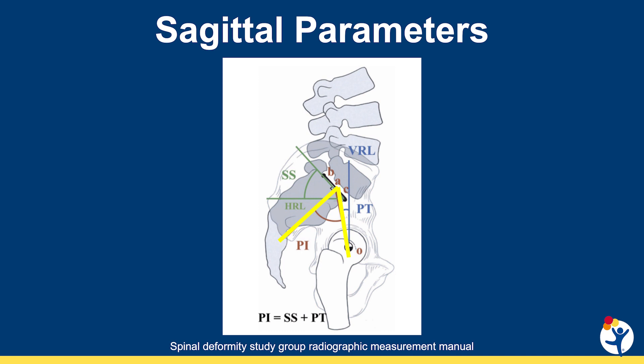Pelvic incidence is a summation of the sacral slope and pelvic tilt, and is not felt to change throughout life — it is unique to each patient. The sacral slope is an angle drawn from a horizontal and a line adjacent to the end plate of S1, and the pelvic tilt is an angle drawn from a vertical to a line drawn from the center of the sacrum to the center of the femoral heads. When you add these two angles together, you get the pelvic incidence.